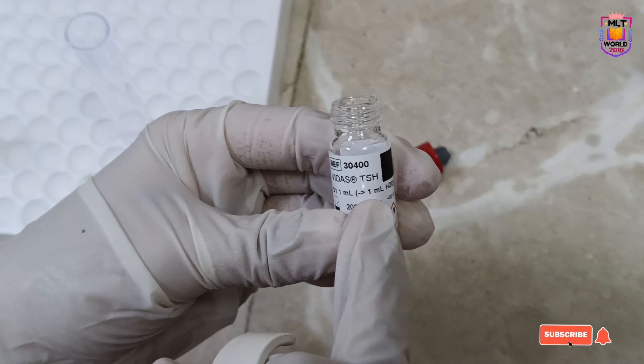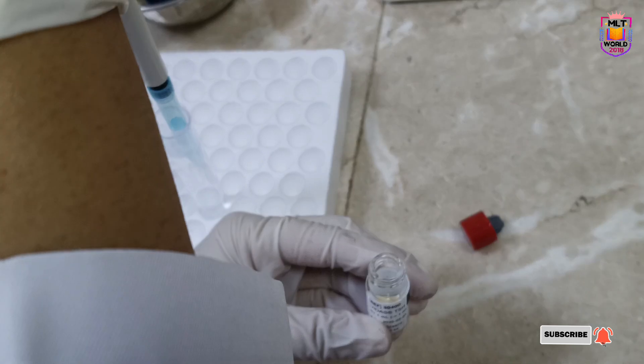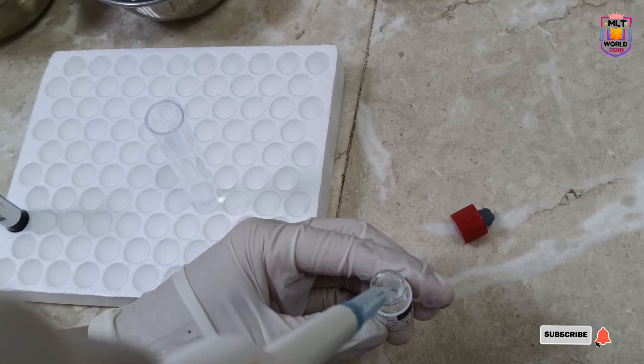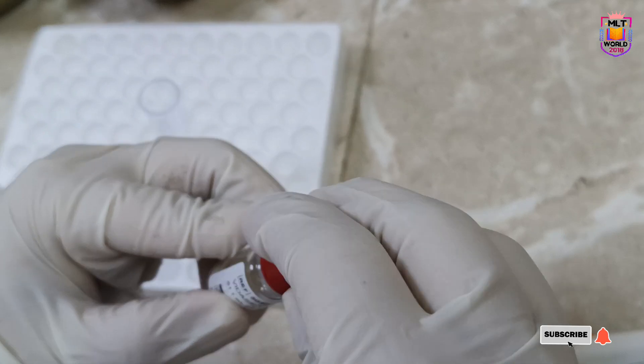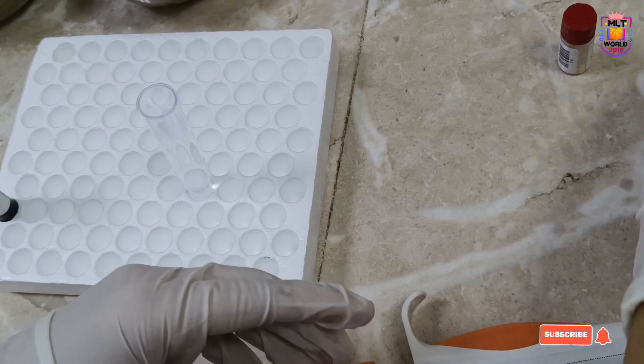You see here it's written. Always check the vial to see which type of diluent needs to be added and how much quantity. Another important thing: when you are pipetting and aspirating, keep the pipette straight, and when dispensing, keep it at a 45-degree angle to avoid bubbles.